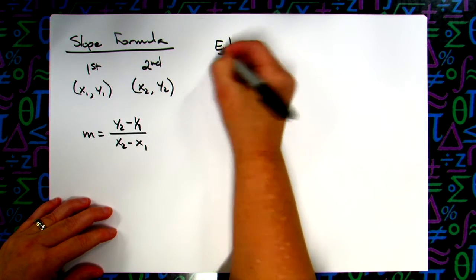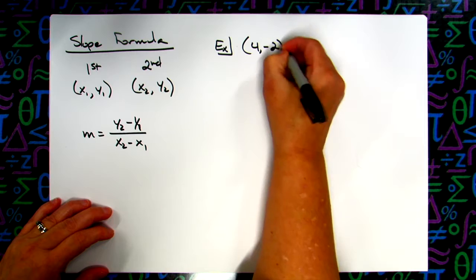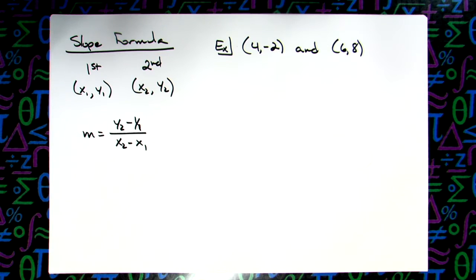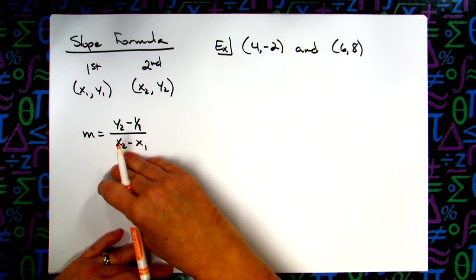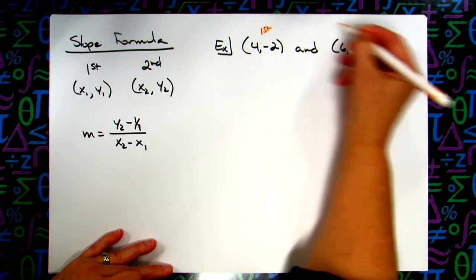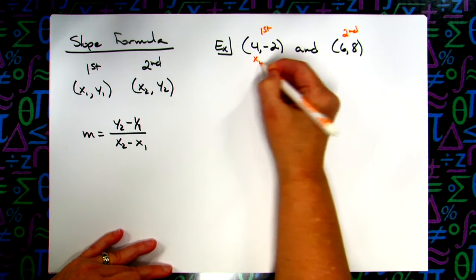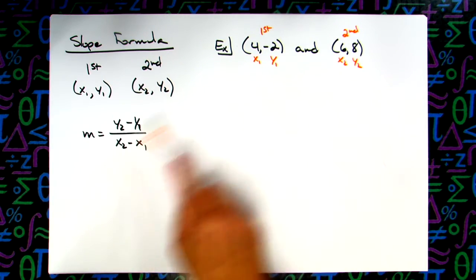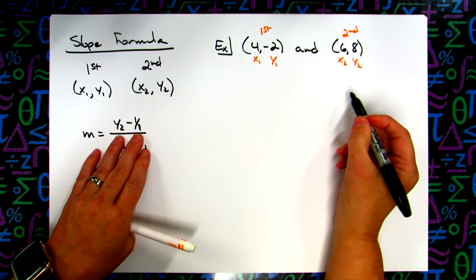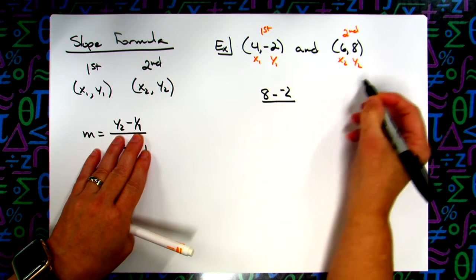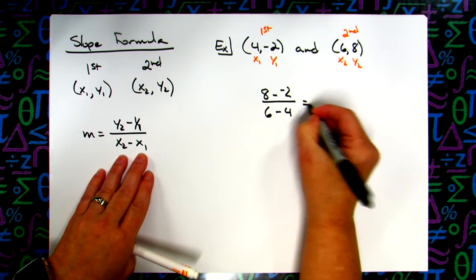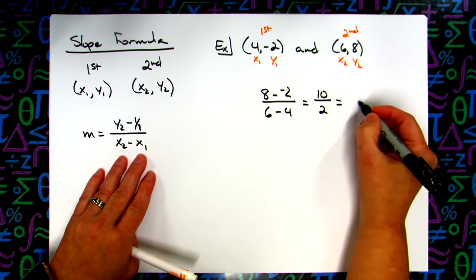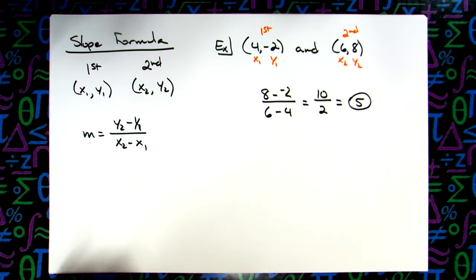Let's work out an example. Let's do the points (4, -2) and (6, 8). It might help to label them so when you're plugging in you don't grab the wrong numbers. This is the first point — x-sub-1, y-sub-1 — and this is the second point — x-sub-2, y-sub-2. So I'm going to subtract my y's: 8 minus negative 2, and subtract the x coordinates: 6 minus 4. On top we get a plus, so we have 10 over 2, which gives us a slope of 5.